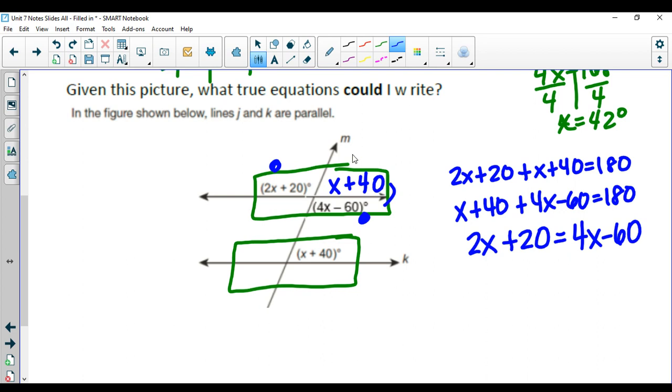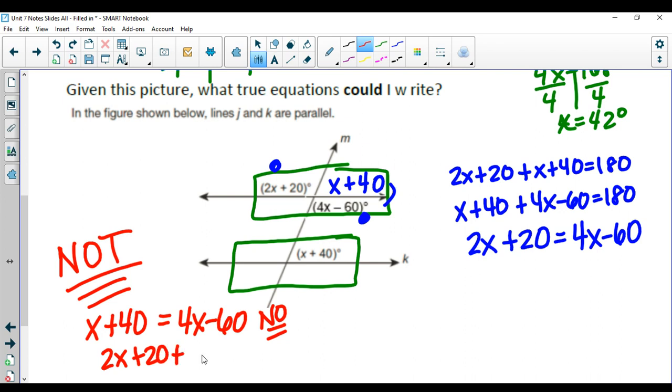An equation that I could not write, so we're going to say not, no, and I'm going to write these in red because that usually means no, would be something like x plus 40 is equal to 4x minus 60. And I hope you can agree and understand why, because they're a linear pair. They're not across from each other, so an equation like this would not work. So this is a no equation. We could also say something like 2x plus 20 plus 4x minus 60 equals 180. That may not necessarily be true. They're across from each other, they're verticals, it does not mean that they are necessarily a linear pair. It's possible for it to happen, but it would have to be a very special case where both angles would actually be 90 degrees. So that would just be a very special circumstance.